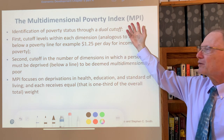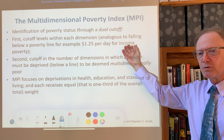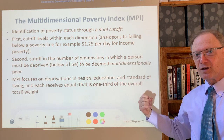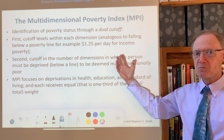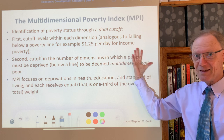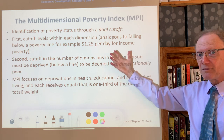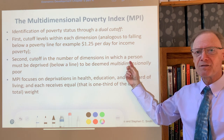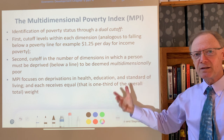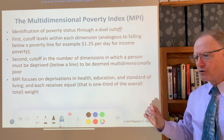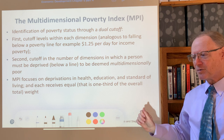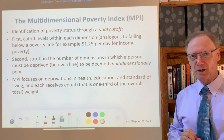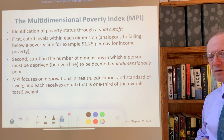For the most part, specifically within the MPI, there aren't data to have continuous variables like income. As a result, there's a deprivation indicator given a value of 1 if the person is deprived — identified as being deprived in that dimension or indicator — and 0 if they're not. Second, there's a cutoff in the number of dimensions in which a person has to be deprived in order to be deemed multidimensionally poor. Usually it's not enough to be deprived in just one indicator.